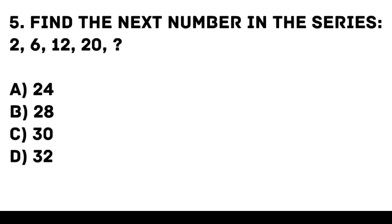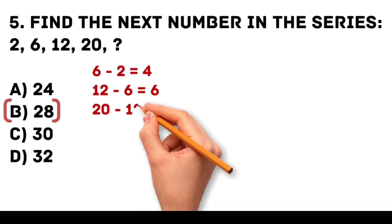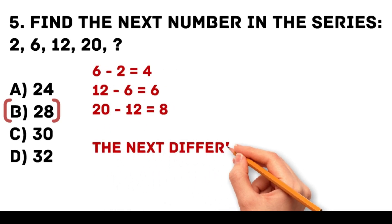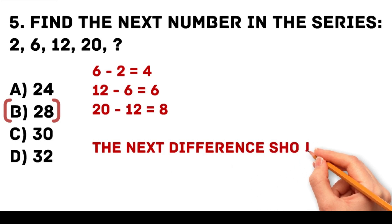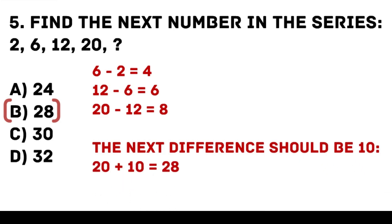Answer: B. 28. The differences between the numbers increase by 2. 6 minus 2 is equal to 4. 12 minus 6 is equal to 6. 20 minus 12 is equal to 8. The next difference should be 10. 20 plus 10 is equal to 28.